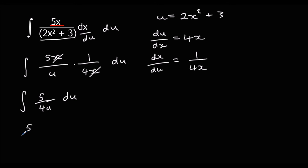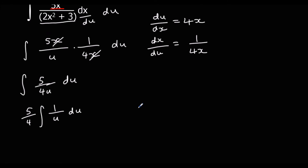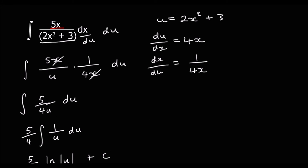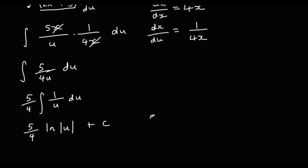That leaves us with 5 over 4u with respect to u. We can take the 5 over 4 outside and just have 1 over u with respect to u. Integrating 1 over u gives us ln u plus c. Then we substitute back in our u, which is 2x squared plus 3, giving us 5 over 4 times ln(2x squared plus 3) plus c.